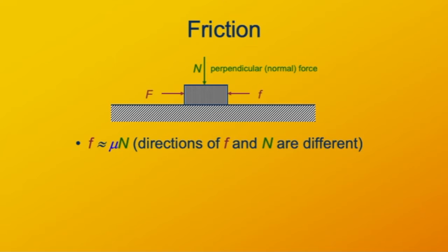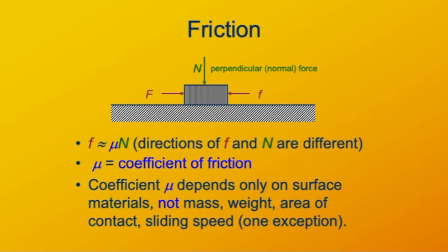The reason we don't write F equals mu times N is because the force of friction and the normal force are in different directions. This mu is known as the coefficient of friction. It depends on what surfaces are in contact — what they are and their conditions, so it depends on materials and might depend on temperature. But it doesn't depend on the mass of either object. The area of contact doesn't matter — that's really weird, but it really is irrelevant. And how fast the two surfaces are sliding across each other also doesn't matter. There is one exception to that.